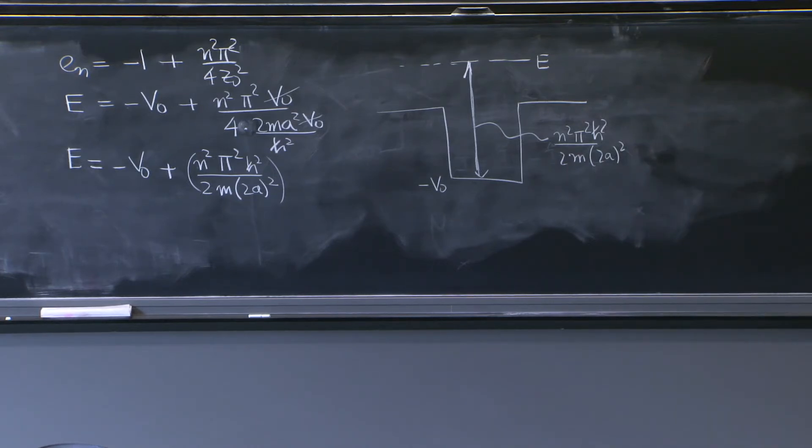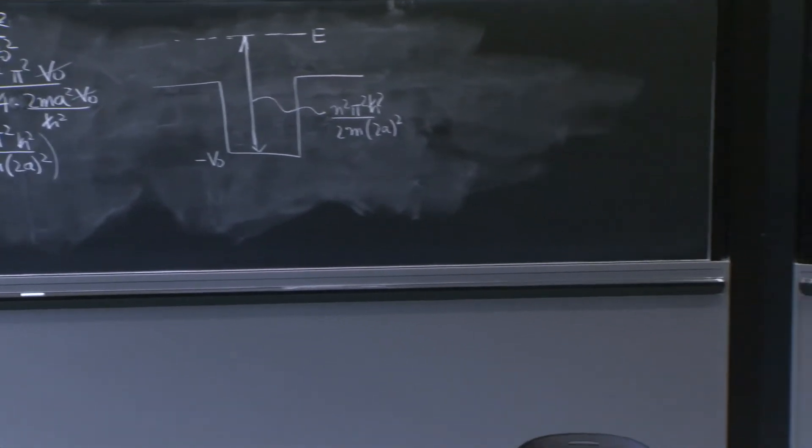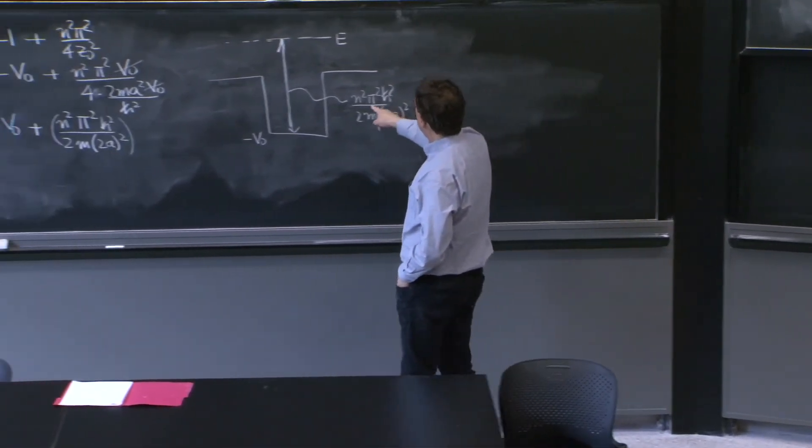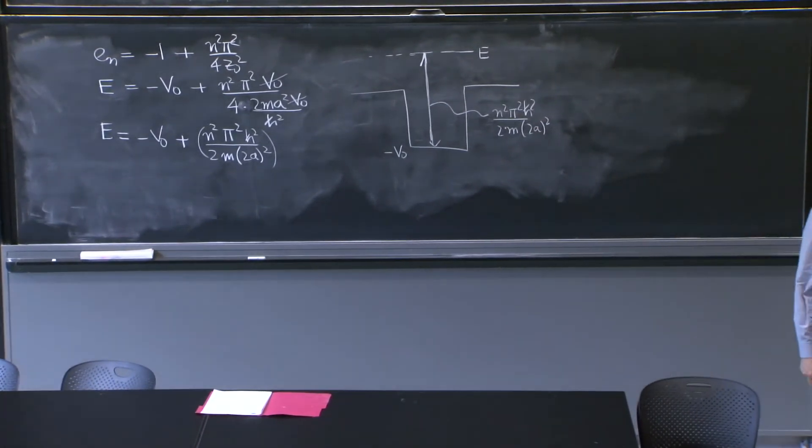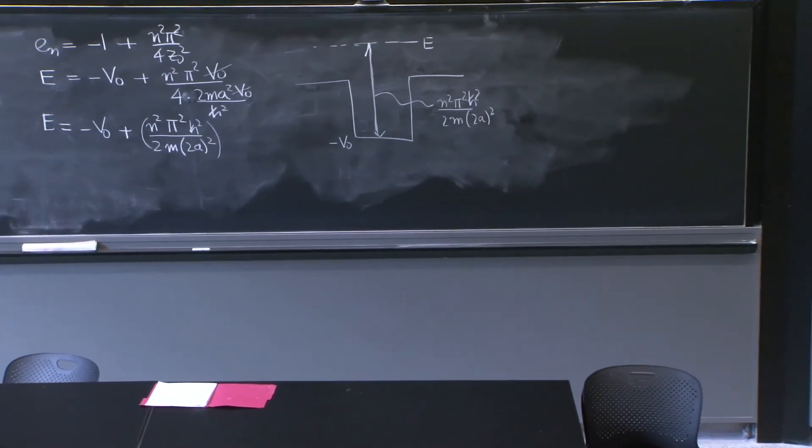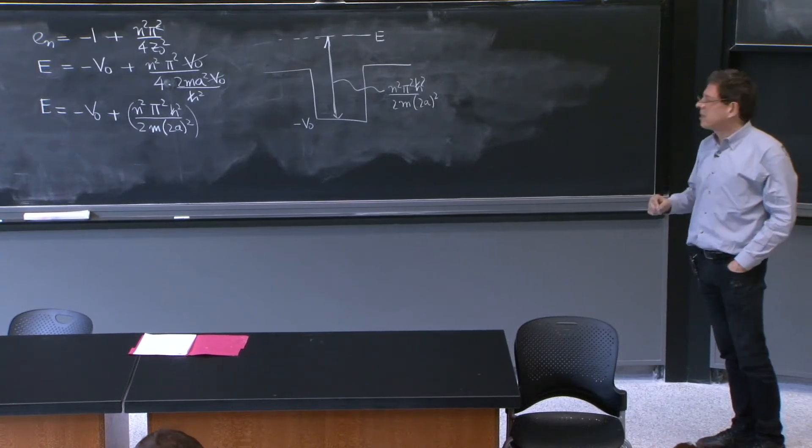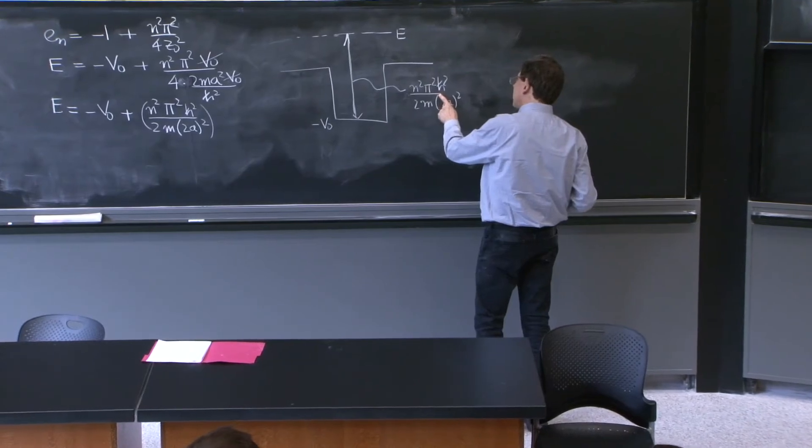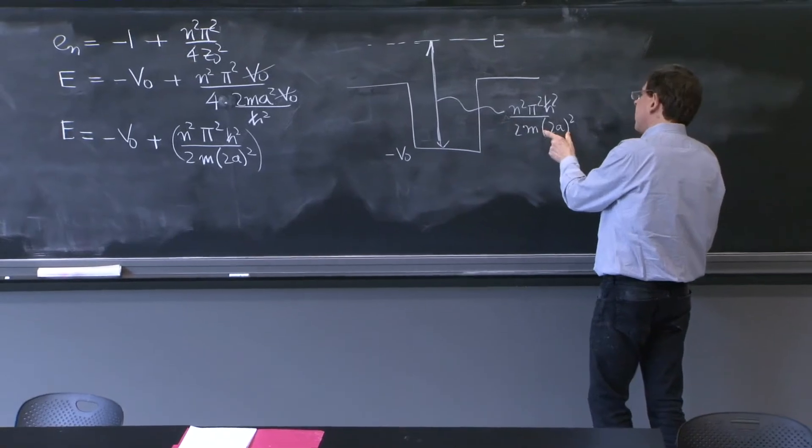So the resonance happens if the energy is a distance above the bottom of the potential, which is equal to this quantity. And now you see something that we could have seen maybe some other way. That what's happening here is a little strange at first sight.